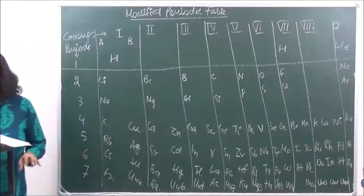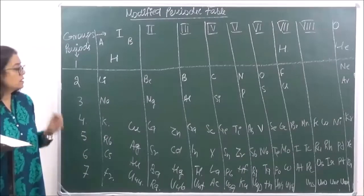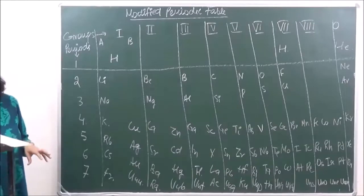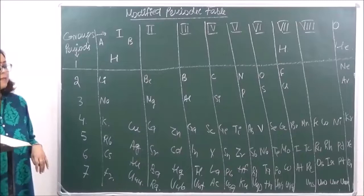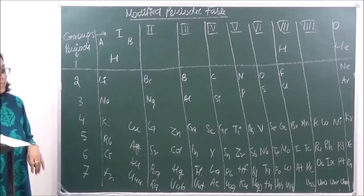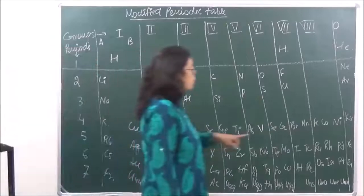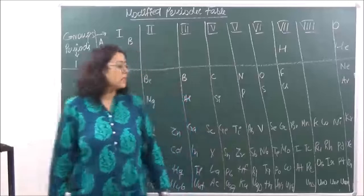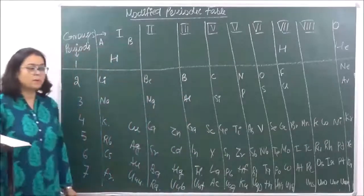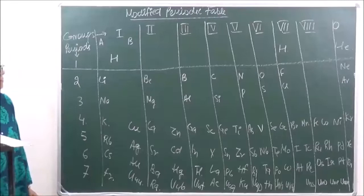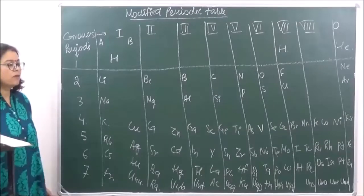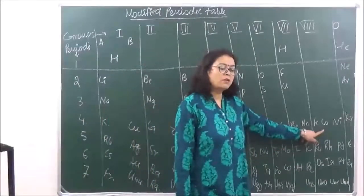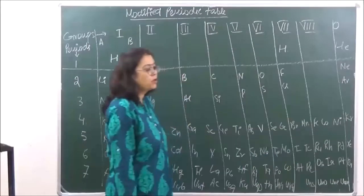The second anomalous pair was cobalt and nickel. In the case of cobalt, the atomic mass was 59, and in the case of nickel, the atomic mass was 58.6. Still, cobalt was placed before nickel, which was anomalous according to atomic masses. But when looking at atomic numbers, cobalt is 27 and nickel is 28, which rectified the position of cobalt placed before nickel in the periodic table.